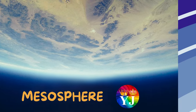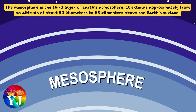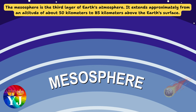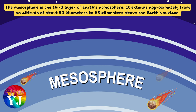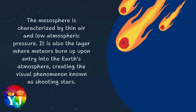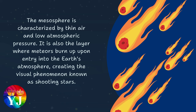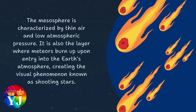The mesosphere is the third layer of Earth's atmosphere. It extends approximately from an altitude of about 50 kilometers to 85 kilometers above the Earth's surface. The mesosphere is characterized by thin air and low atmospheric pressure. It is also the layer where meteors burn up upon entry into the Earth's atmosphere, creating the visual phenomenon known as shooting stars.